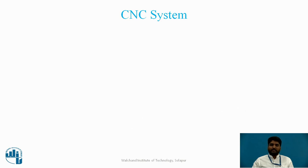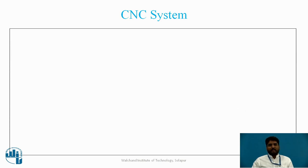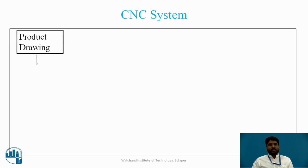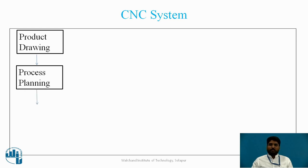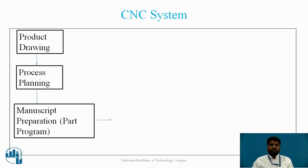The layout of the CNC system and the NC system are similar. The only difference between NC and CNC is that in CNC we use advanced computers, whereas in NC we used punched tapes or punched cards. We get a product drawing, go for process planning, and then the manuscript is prepared — but in CNC, we use computers to code.